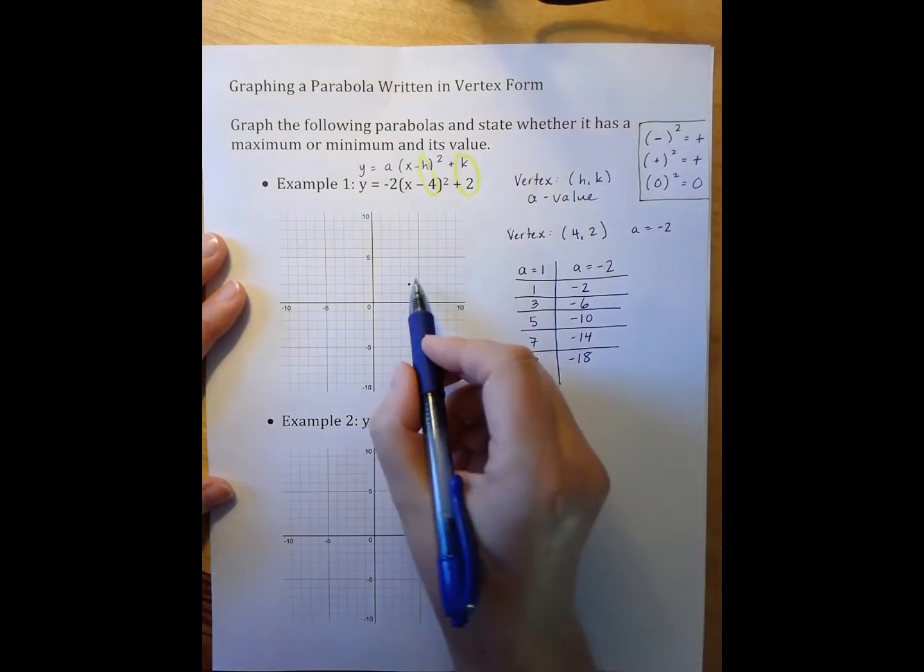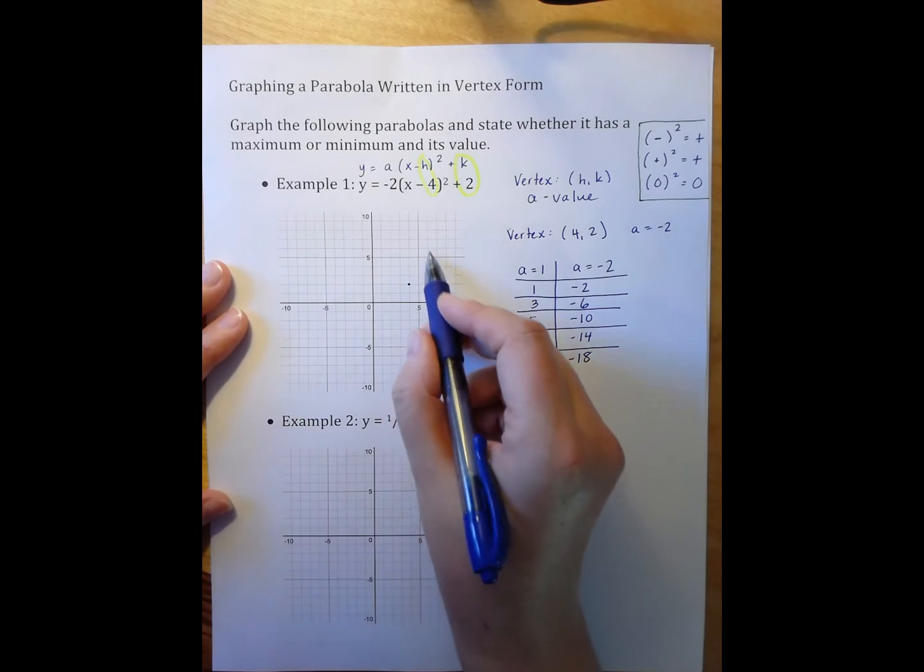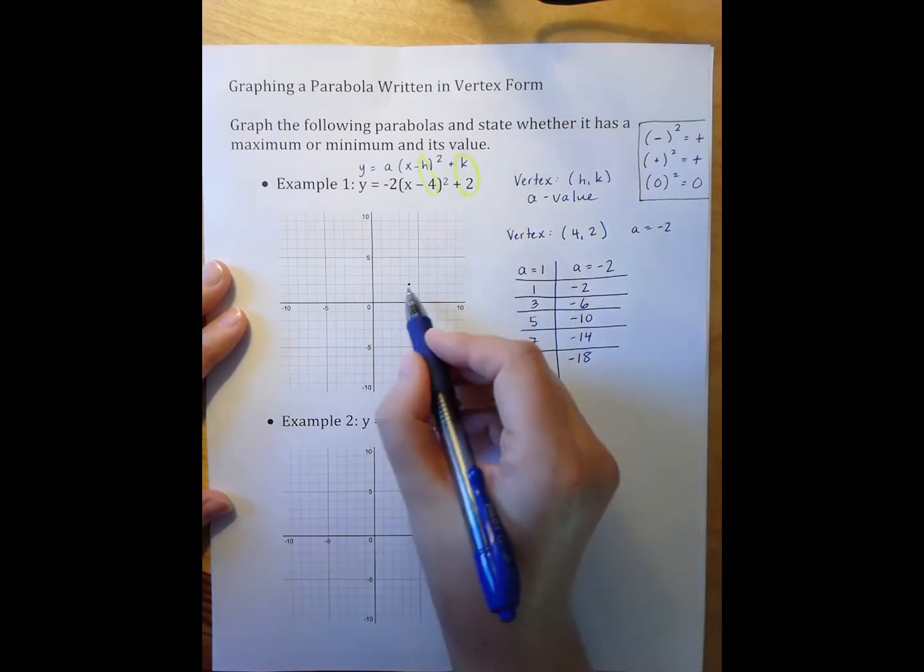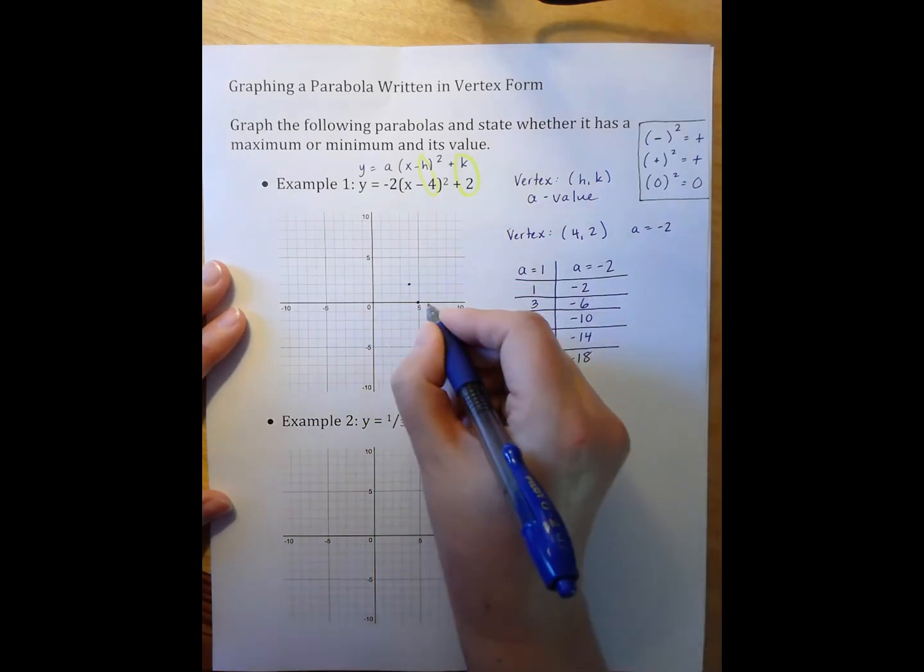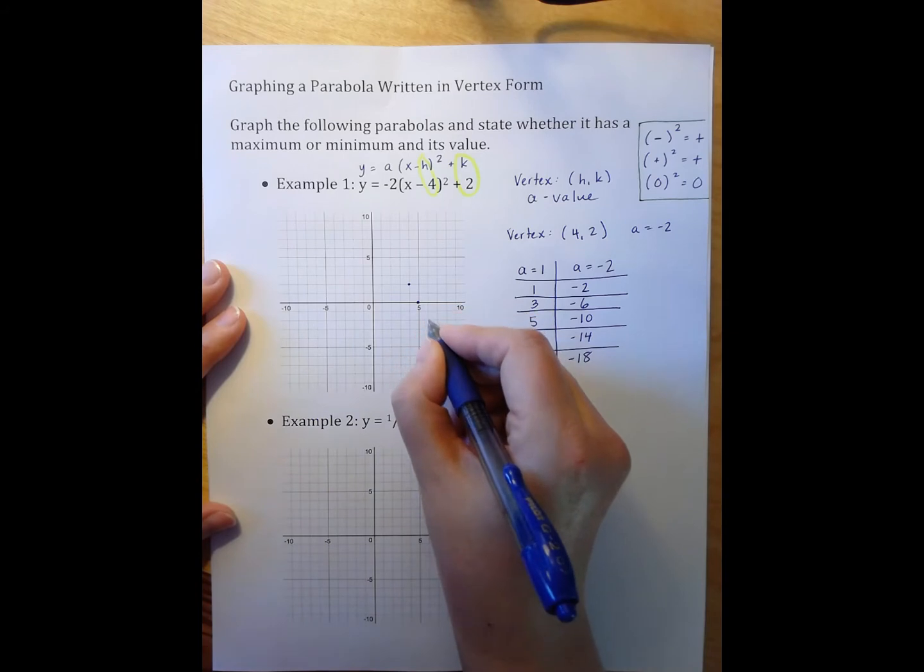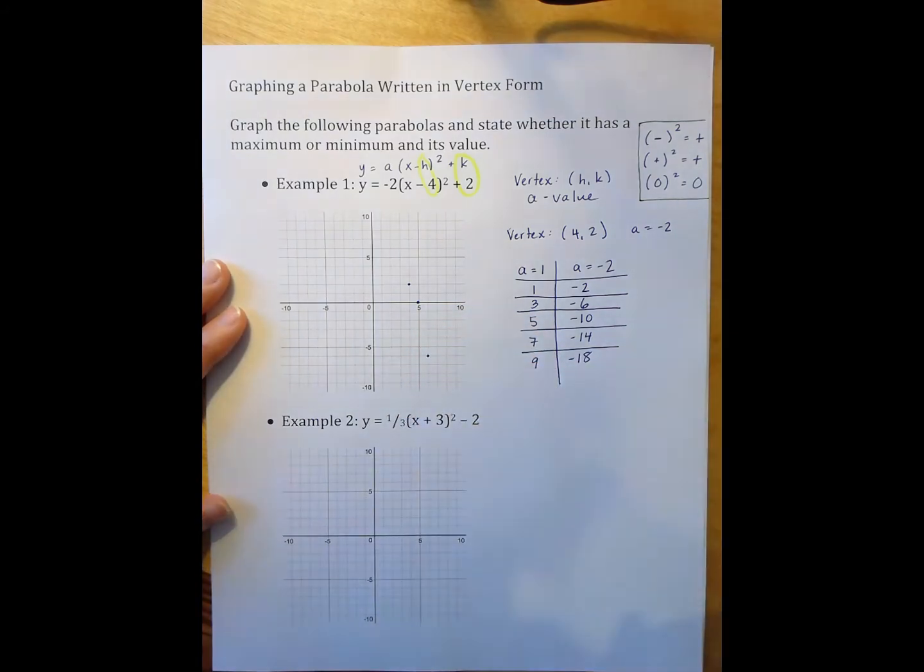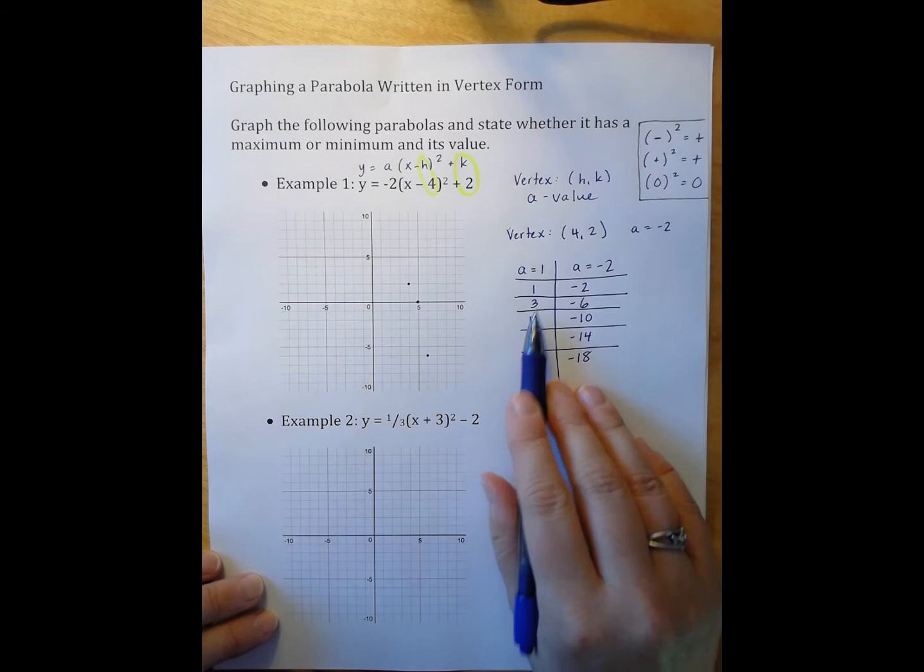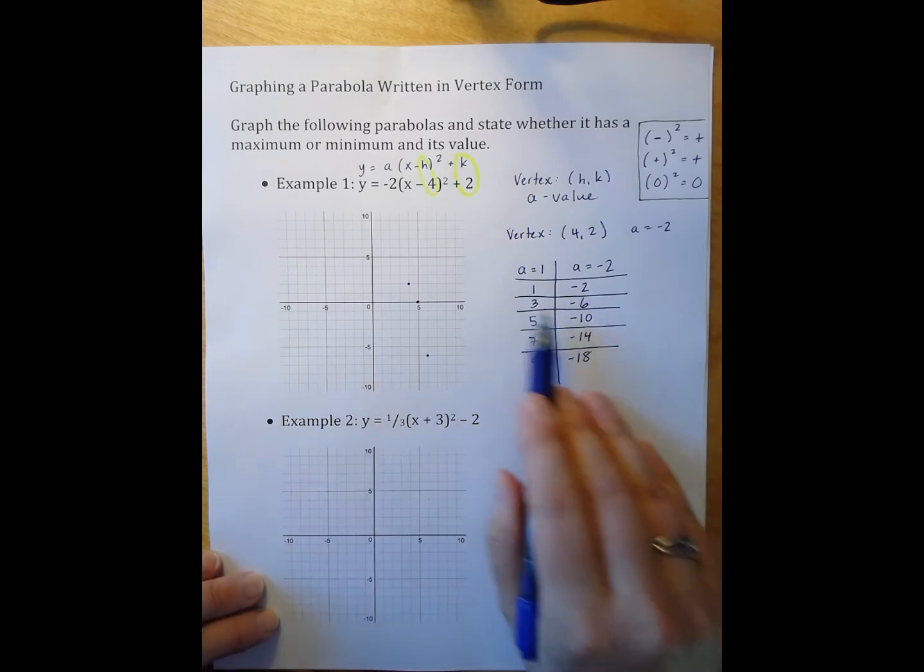Instead of my parabola being the pattern of over 1 up 1, over 1 up 3, over 1 up 5, over 1 up 7, I'm actually going to go over 1 down 2, over 1 down 6, over 1 down 10. But the graph I have here doesn't fit all of that, so I'll stop at the pattern where I've gone over 1 three times, essentially two times down 8.